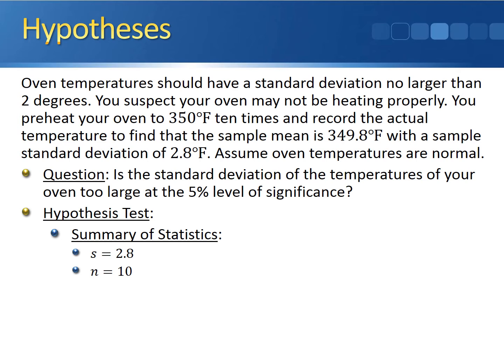One really important thing about this test to realize is that we're working with the variance. The problem told us that the oven temperature should have a population standard deviation no larger than 2 degrees. However, this is a chi-squared test for a population variance, which means that everything should be in terms of the population variance. So our hypothesized population variance, σ², should be 2², which is 4. And we're doing this test at the 5% level of significance.